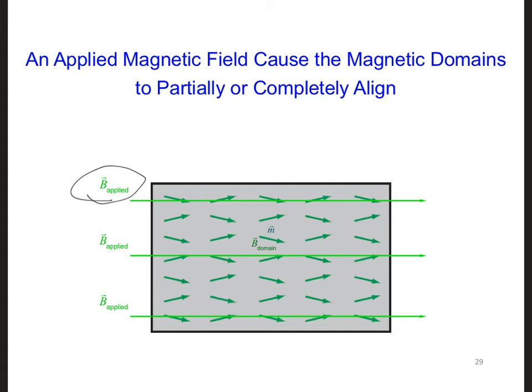With the magnetic domains aligned, a net internal magnetic flux density, B induced, arises within the ferromagnetic material. So if I were to sum up all these dark green arrows, I would get a total B induced.